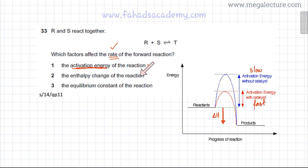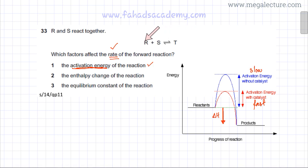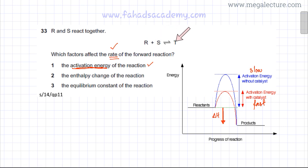The equilibrium constant of the reaction only determines whether more products or more reactants are going to be formed — it's the ratio of products to reactants. It doesn't determine the rate at which the forward reaction is happening or the rate at which the backward reaction is happening. So equilibrium constants have no relationship with rate.